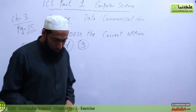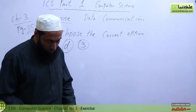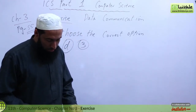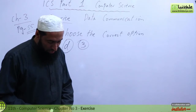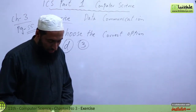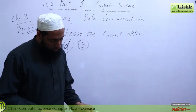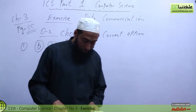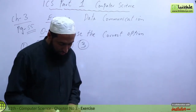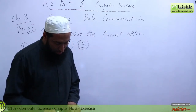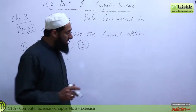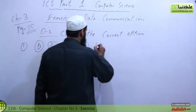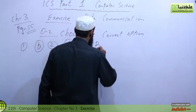Number 3: Bit stands for what? The options are bionic integer, binary digit, bionic interval, or none of the above. The answer is B — binary digit. Bit stands for binary digit.